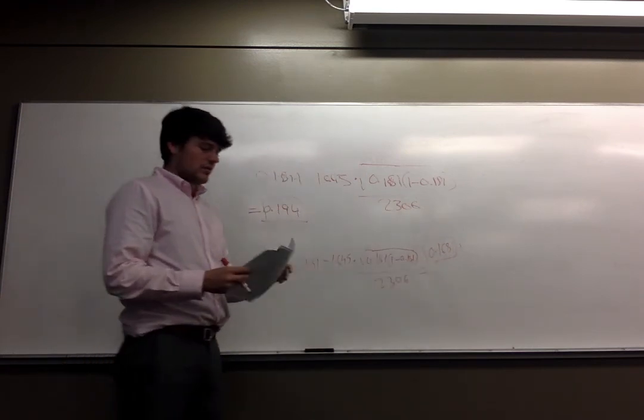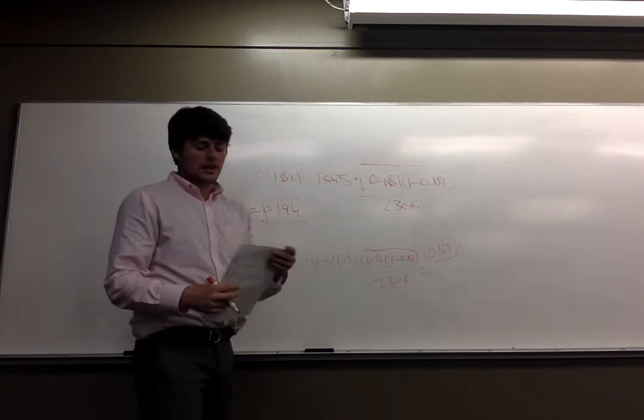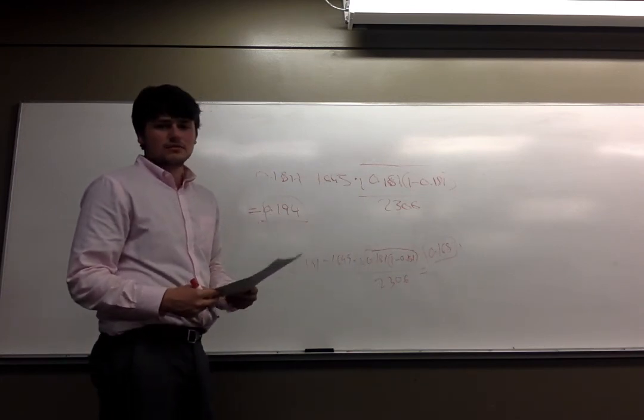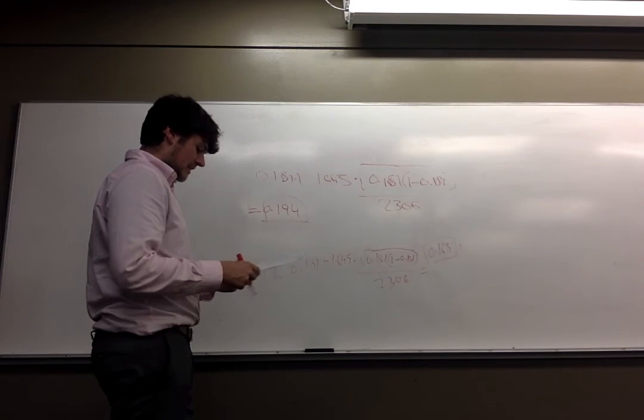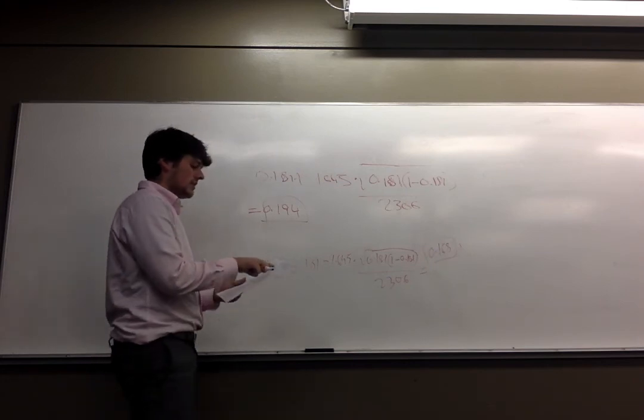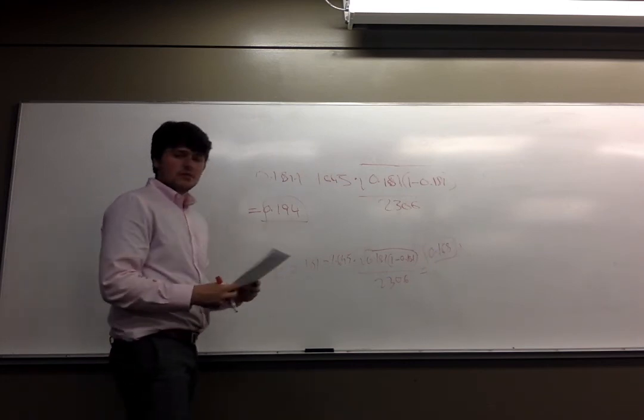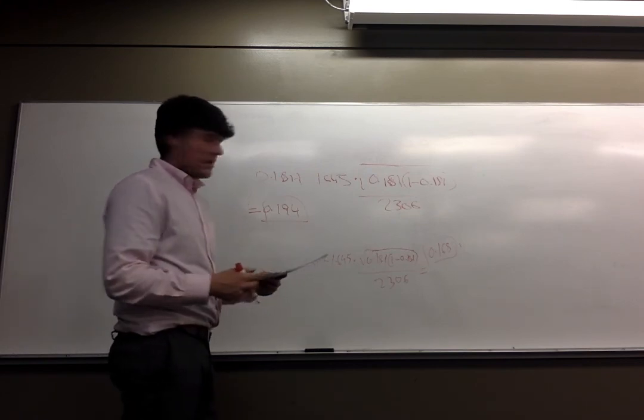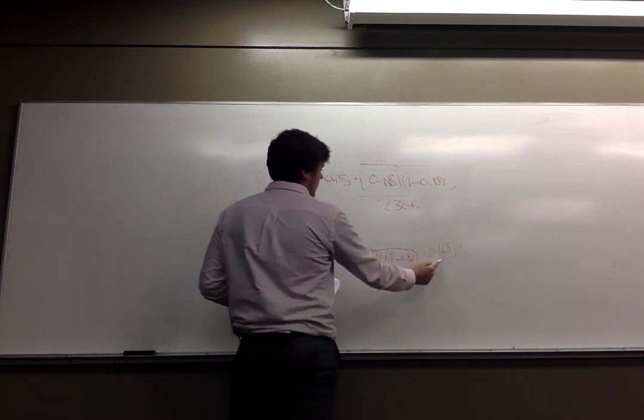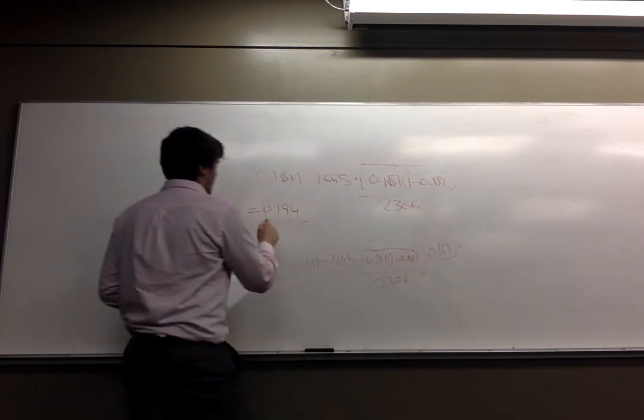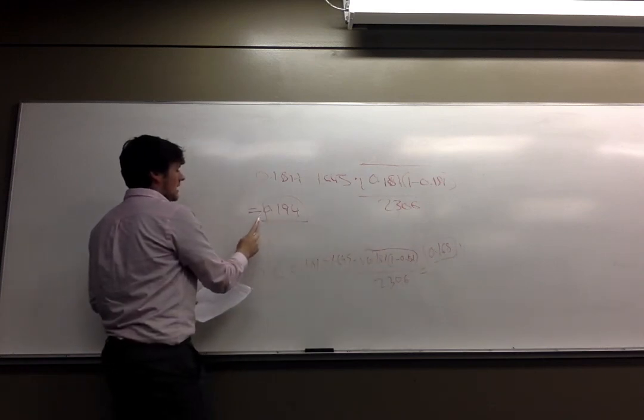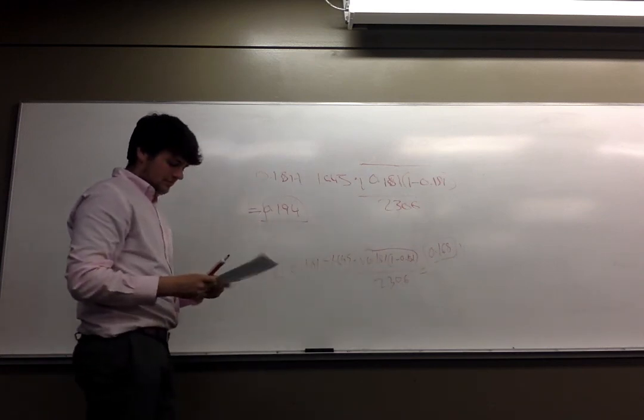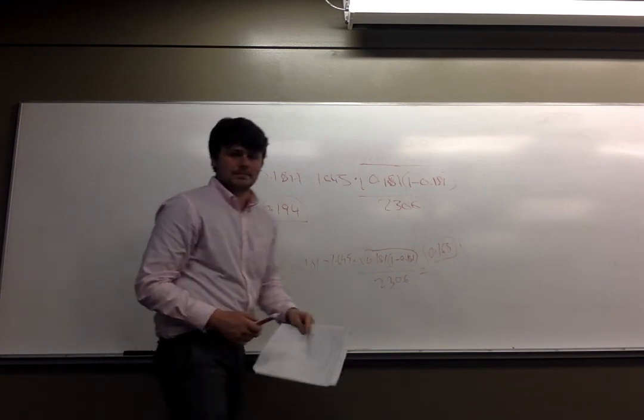And then the final part of this problem asks us to interpret the interval, and basically what that means is we have to say what the interval means, which is that we can be 90% confident, because that's the confidence interval we use. We can be 90% confident that between the lower bound of 0.168 and the upper bound of 0.194. So that's question three.